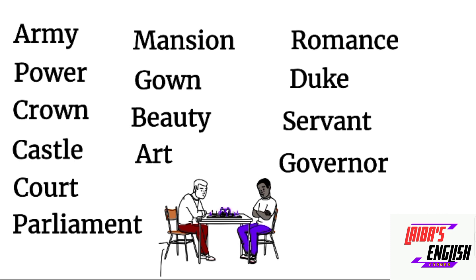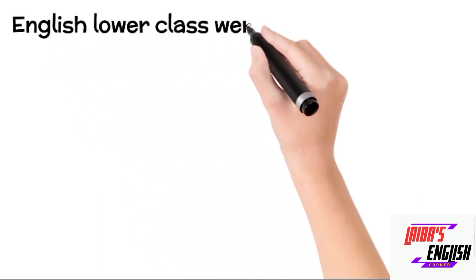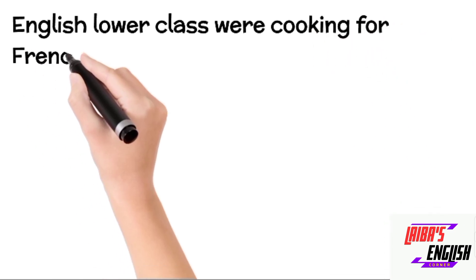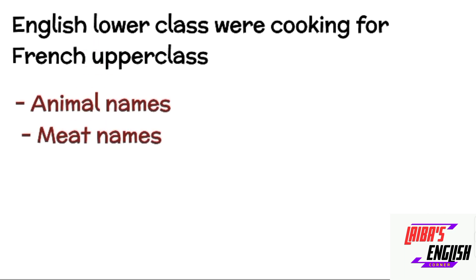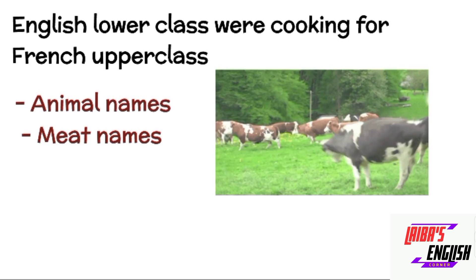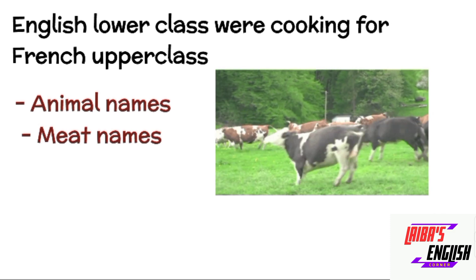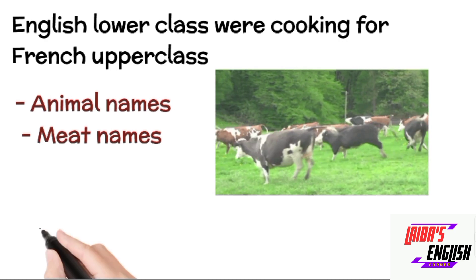These are some of the words included from French into English. English was considered a vulgar language — the language of the lower class — and people who spoke English were considered servants of the French upper class. English lower-class people were cooking for the French upper class, working in kitchens and different departments. So, many names of animals like cow, ox, calf, sheep, and deer came into use, while the names of meats such as beef, mutton, pork, and bacon were also taken from French.